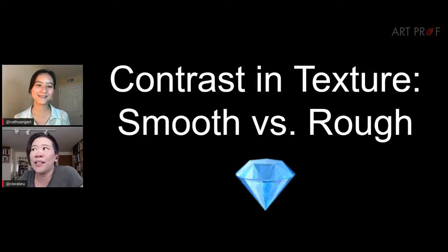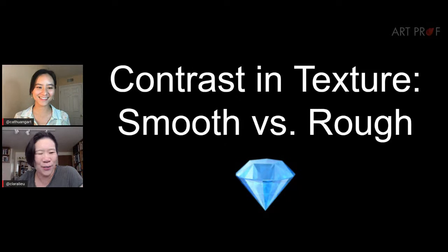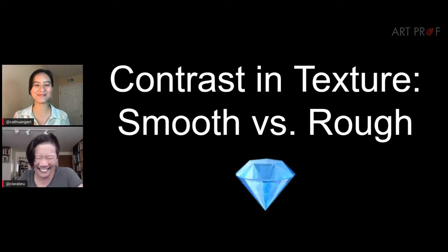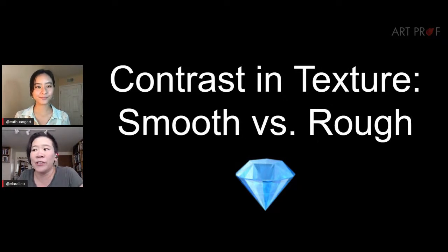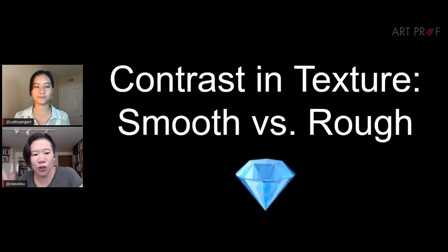For me, texture has a lot to do with touch. For example, when I go clothes shopping, you have to feel all the sweaters to make sure it's not going to be too scratchy. So there's a tangibility there. And I think one of the most effective ways to create texture is to show contrast between two different types of texture — smooth versus rough. So let's look at the first artist.